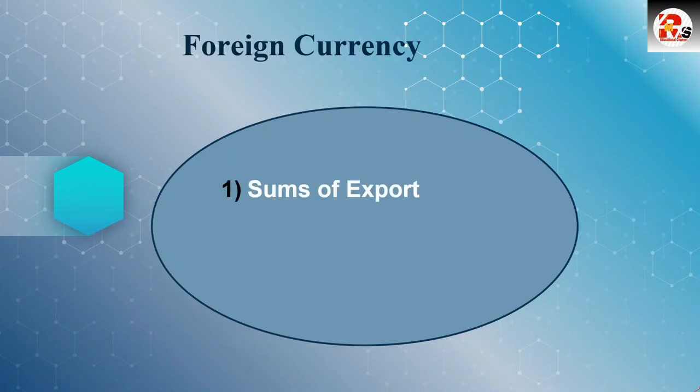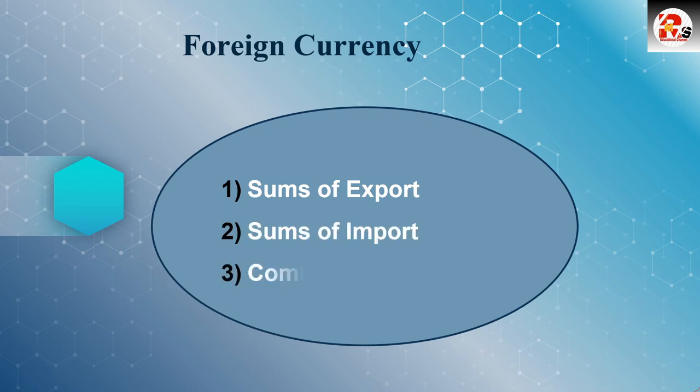Chapter Number 2 is foreign currency. In the foreign currency chapter, we will be learning sums based on export variety — you will study export sums, then import sums, and also combined problems where a single question will have both export and import questions. It is a very interesting chapter and very easy to score. You will find it quite interesting when we cover it ahead.